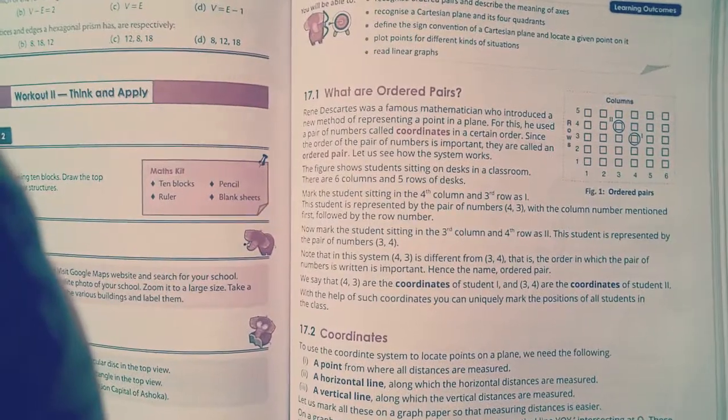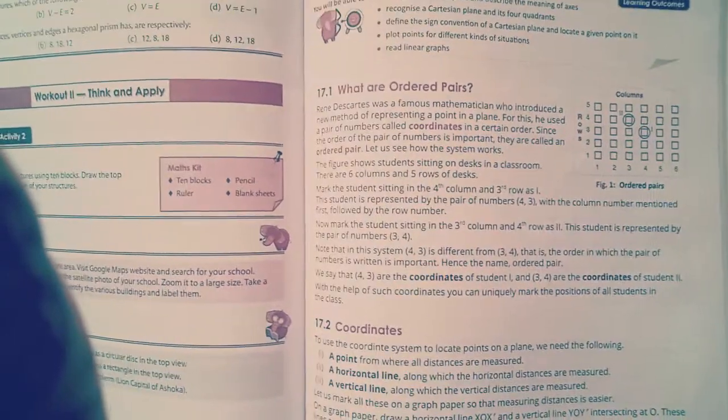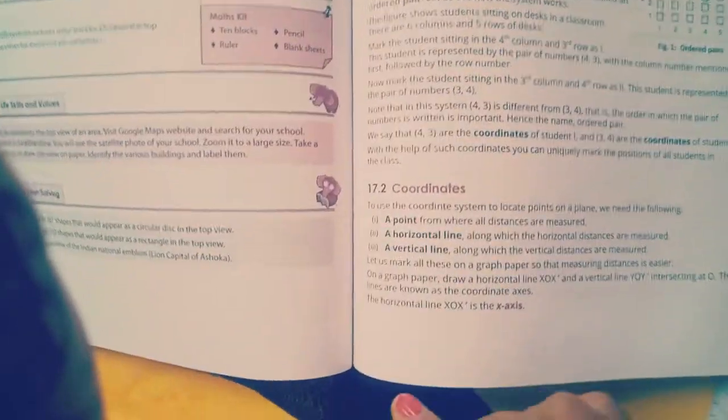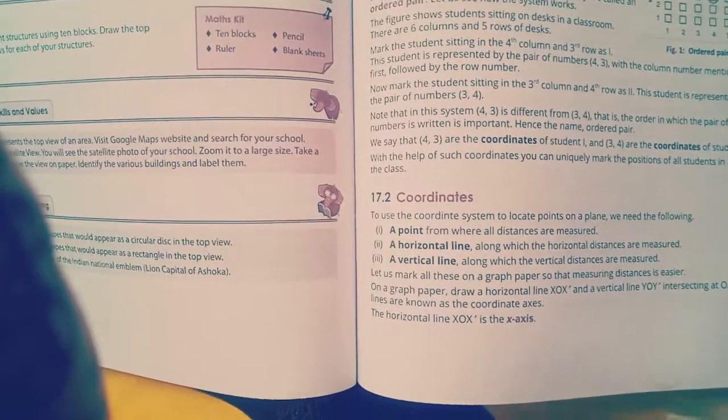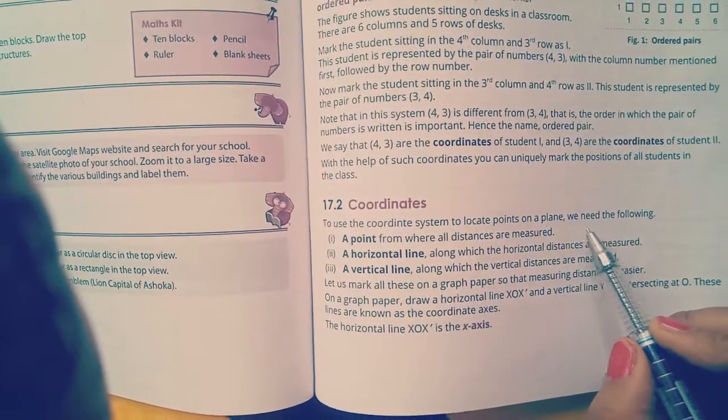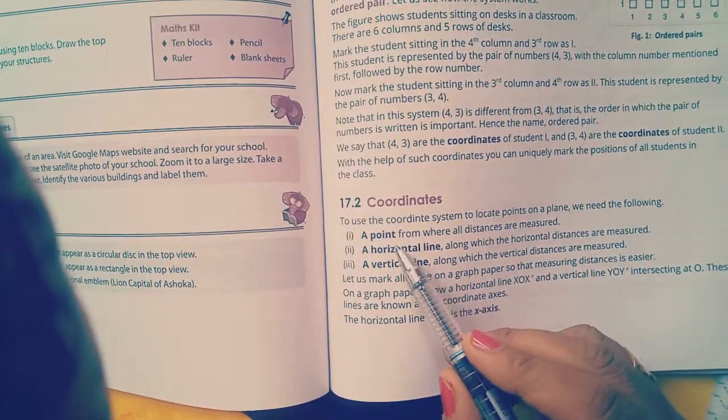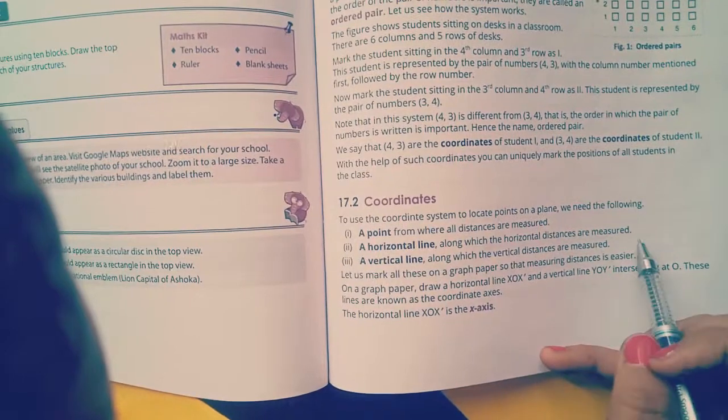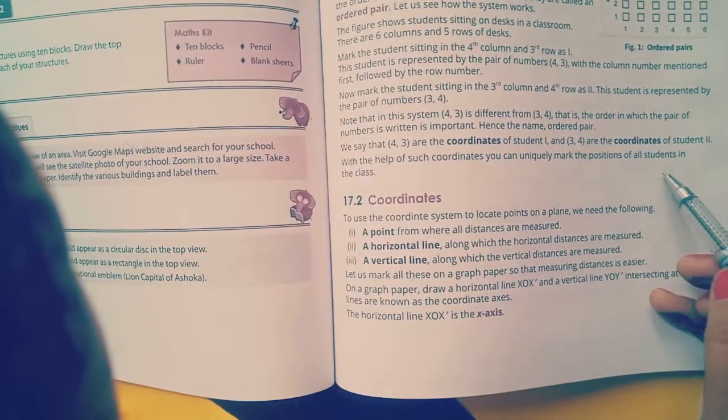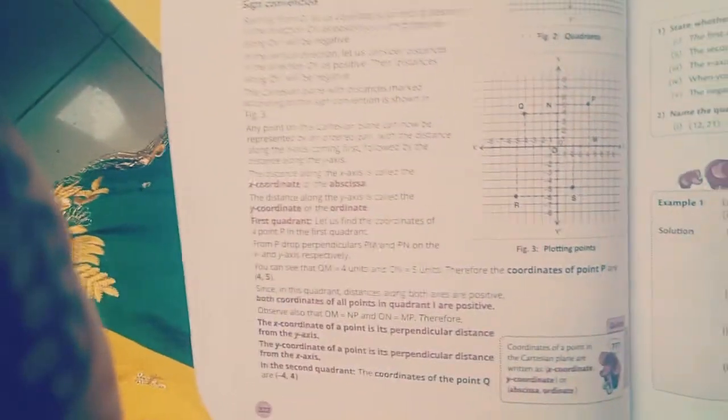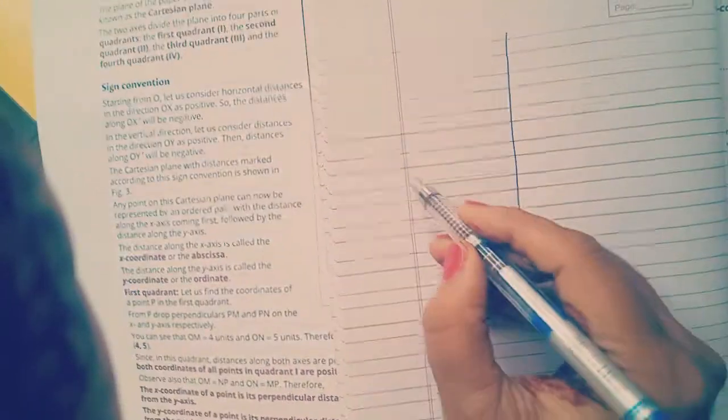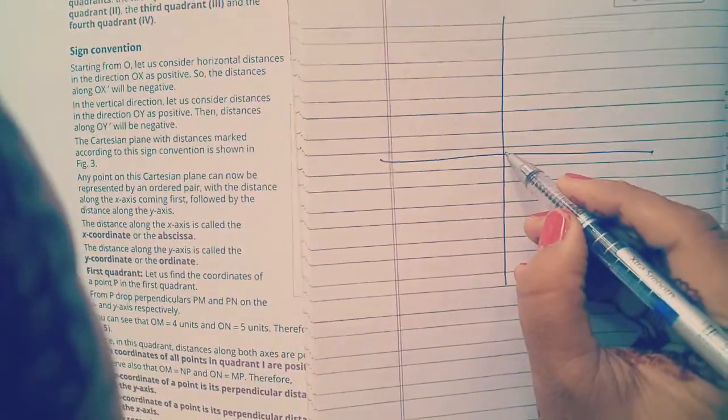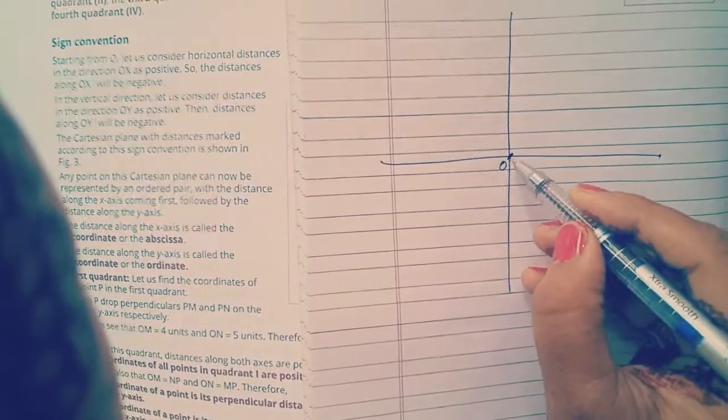To use the coordinate system to locate a point on a plane, we need a point that you have to locate. Then a horizontal line along which the horizontal distances are measured. Then we will need a vertical line. So here is also sign convention. I will give the details to you. So to draw the graph, this one is vertical line, this one is horizontal line. They will meet at origin O. This will be the origin.